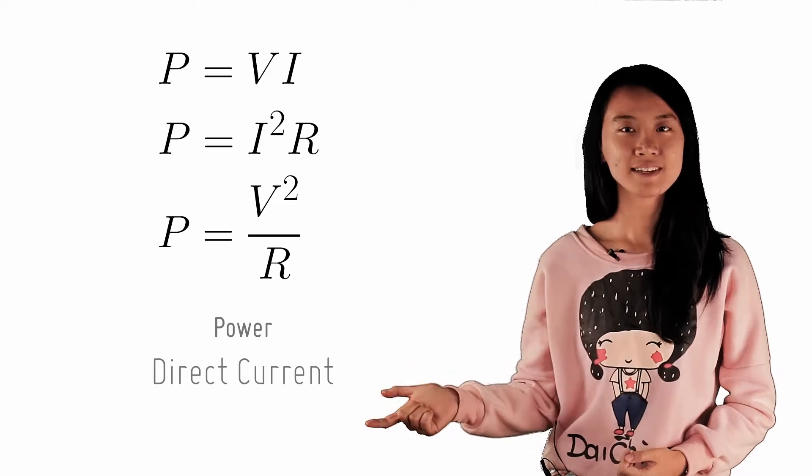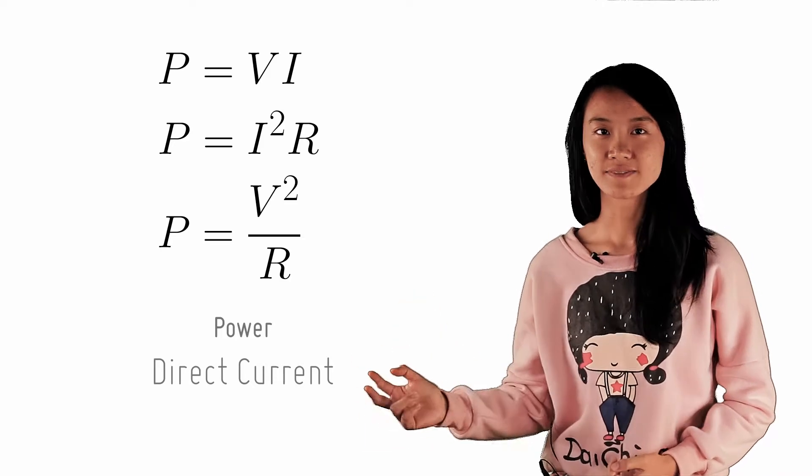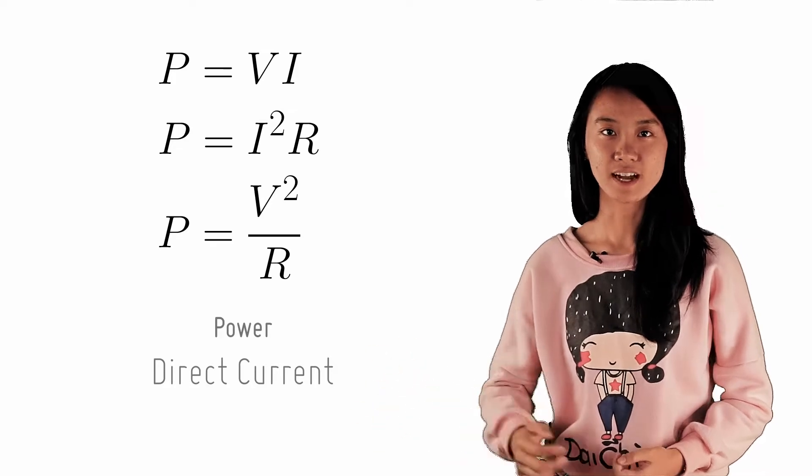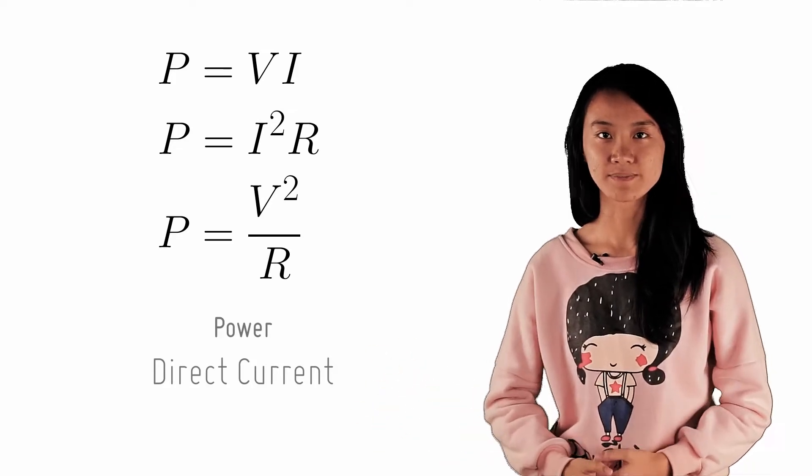P equals VI, P equals I squared R, and P equals V squared over R, where V, I, and R represents the voltage, current, and resistance of the component respectively.